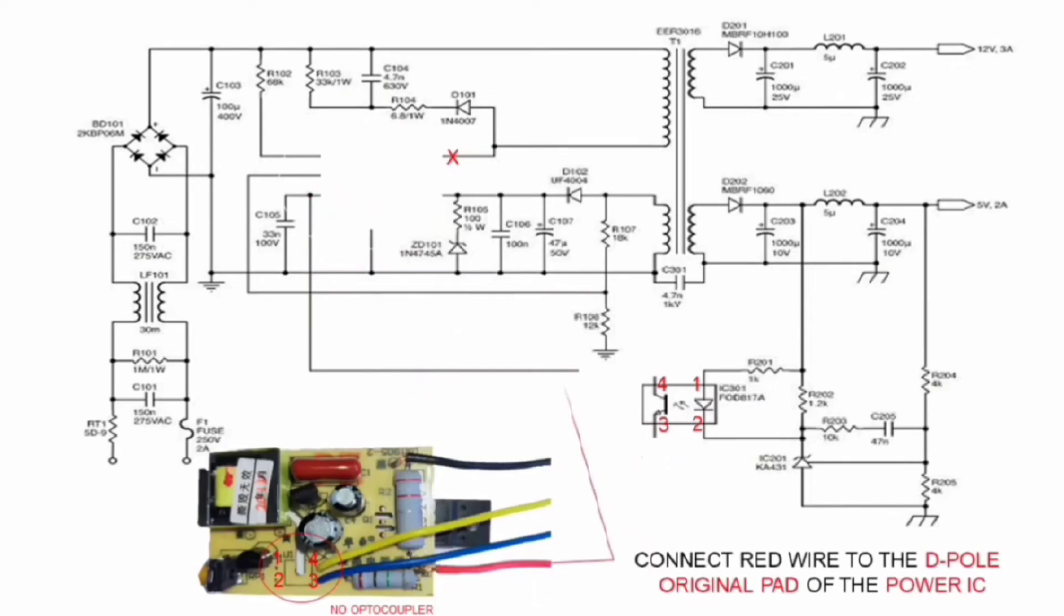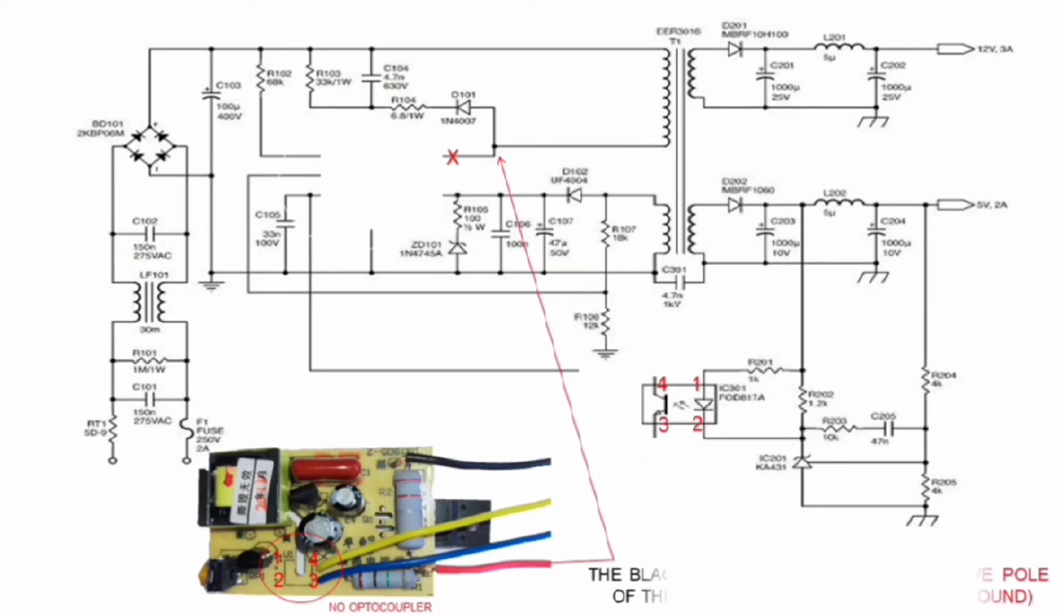Connect the red wire to the D-pole original pad of power IC. The black wire connect to the negative pole of the 300 volts filter capacitor, hot ground.